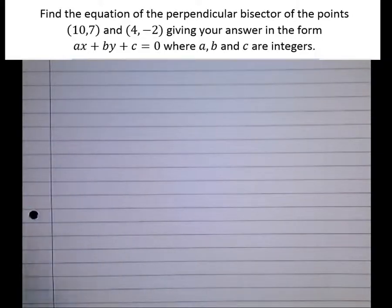Questions involving perpendicular bisectors are quite commonplace in exams, so let's have a look at this one. Find the equation of the perpendicular bisector of the points (10,7) and (4,-2), giving your answer in the form ax + by + c = 0, where a, b, and c are integers.